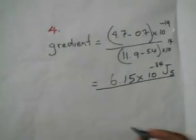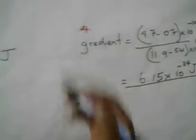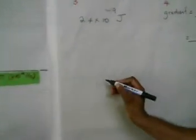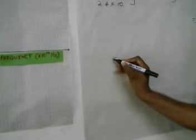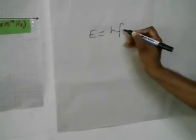As a generalisation, given the linear graph, we can say that energy E equals Hf minus ε₀, where H is the gradient (Planck's constant) and ε₀ is the work function.